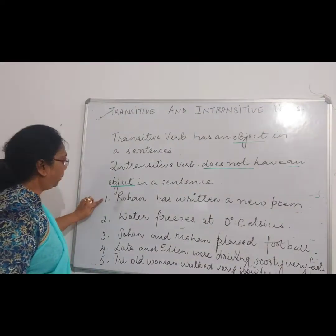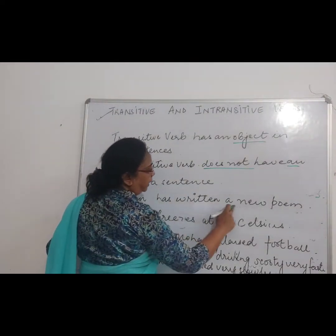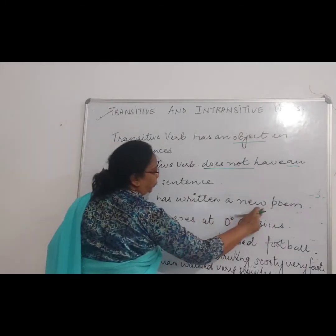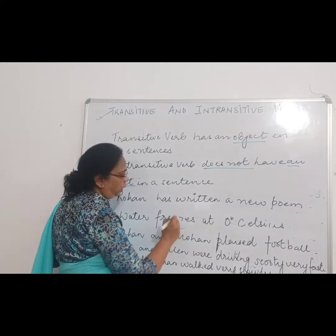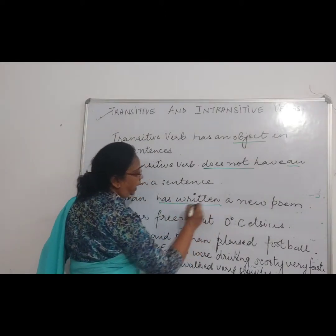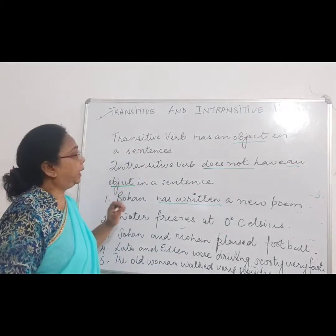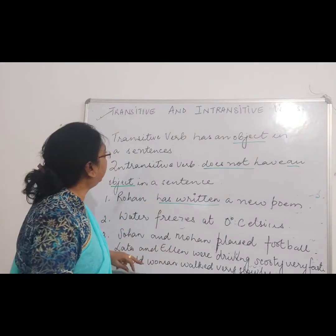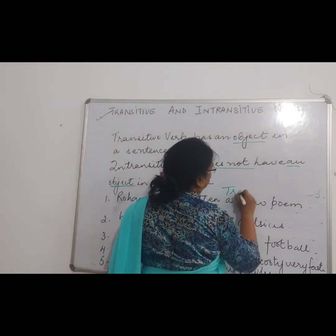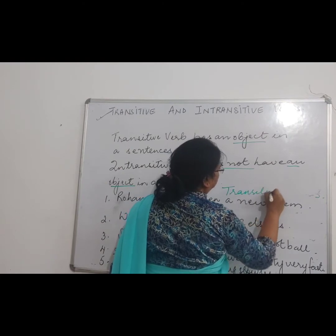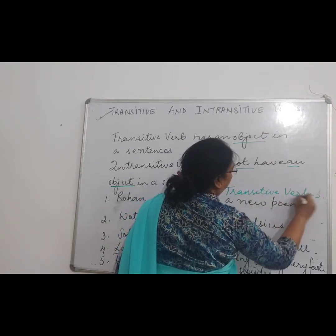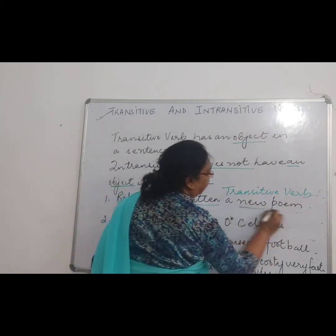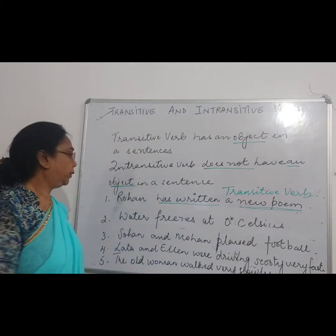See number one: Mohan has written a new poem. Now in this sentence, 'has written' is the verb. And which type of verb is it? It is a transitive verb. Why? Because if you read the question carefully, you will see that it has an object — 'a new poem.'